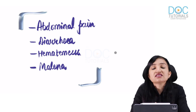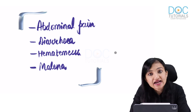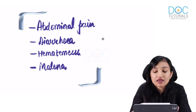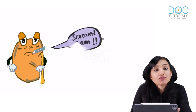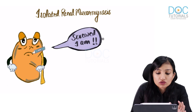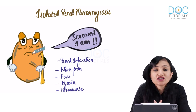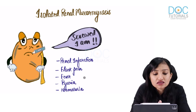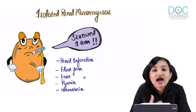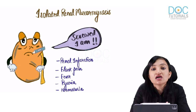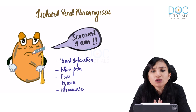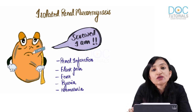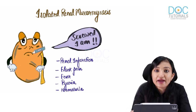The fourth type is isolated renal Mucormycosis, where angioinvasion causes renal infarction. Patients present with flank pain, fever, pyuria, and hematuria. Sadly, these patients are often misdiagnosed as acute bacterial pyelonephritis and given antibiotics — which obviously won't work since the etiology is fungal. The case fatality rate is 65%, still better than ROCM or pulmonary Mucormycosis, but approaches 100% without treatment.